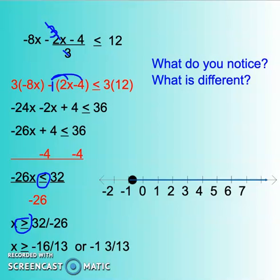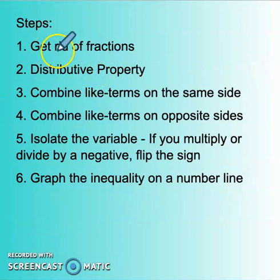Okay so our steps are a little bit different. The only thing that's been added is we have to get rid of fractions. And we multiply through. We multiply with a denominator to get rid of those fractions. But everything else stayed the same. Okay just remember when you multiply or divide by a negative the symbol flips.